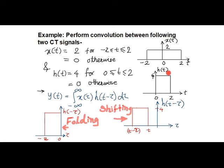After folding operation, we perform shifting. So now it is h of t minus tau.